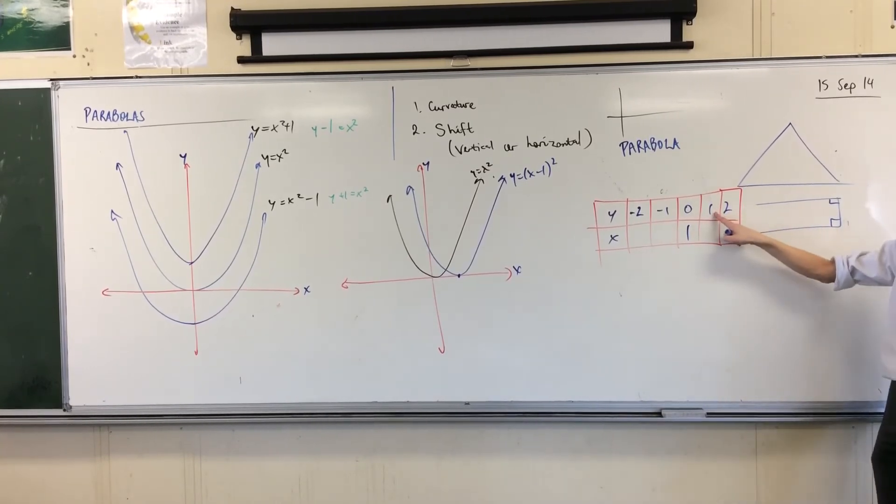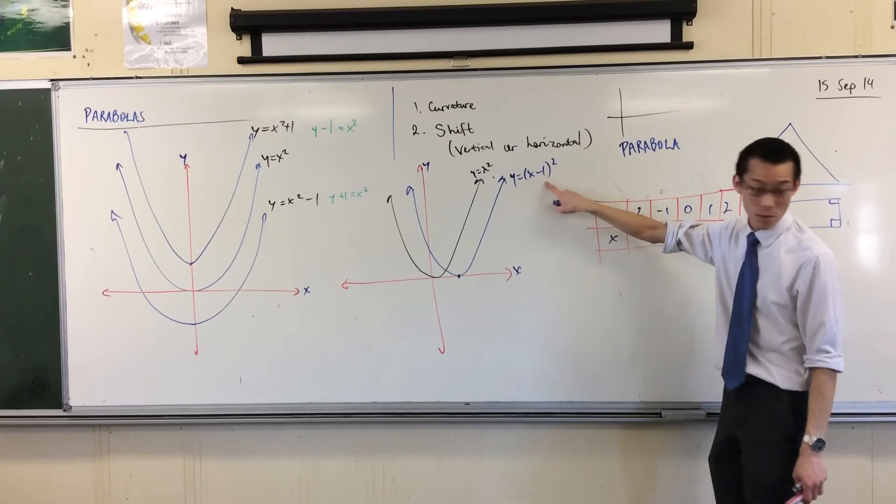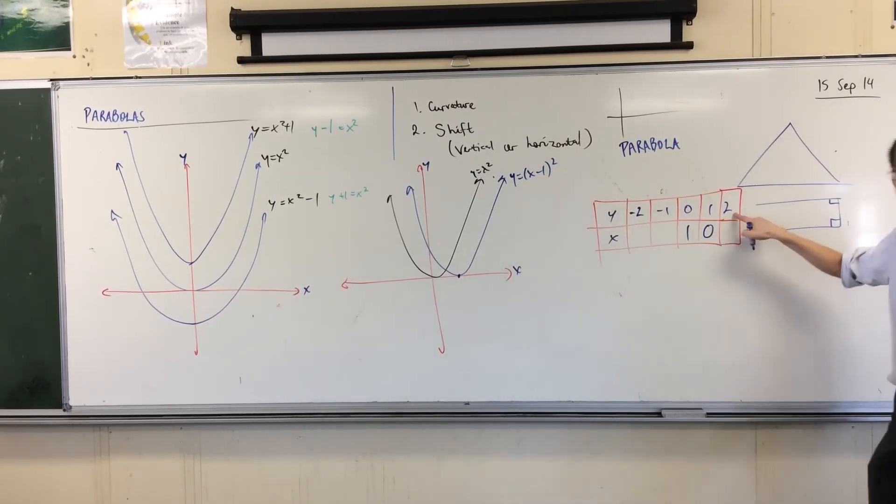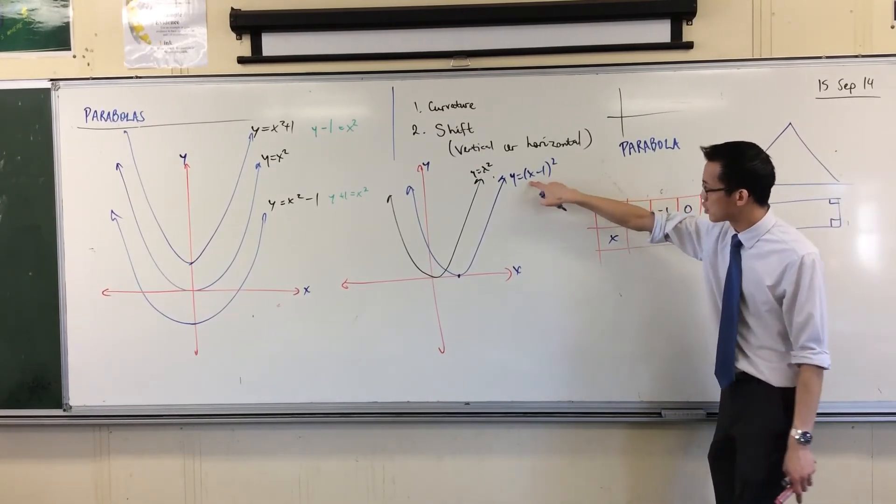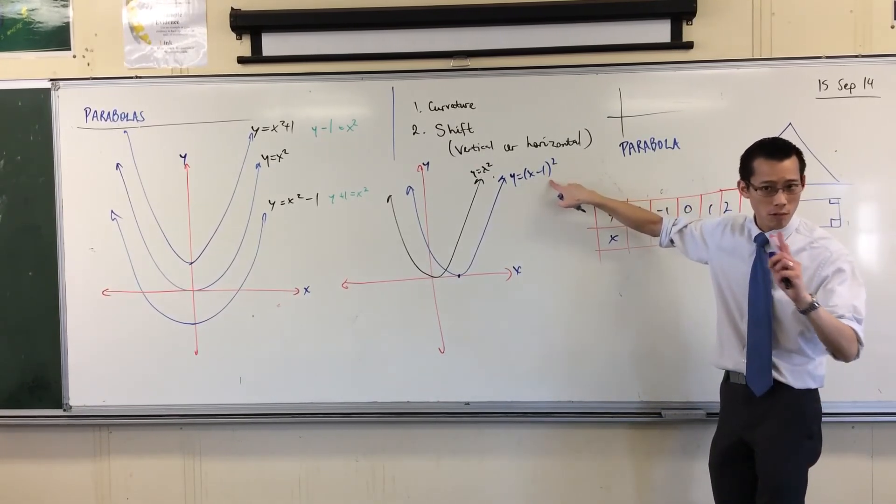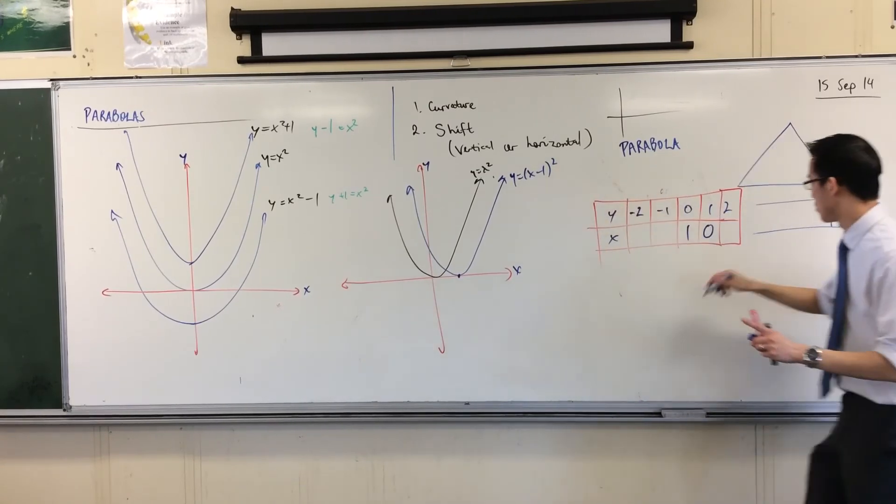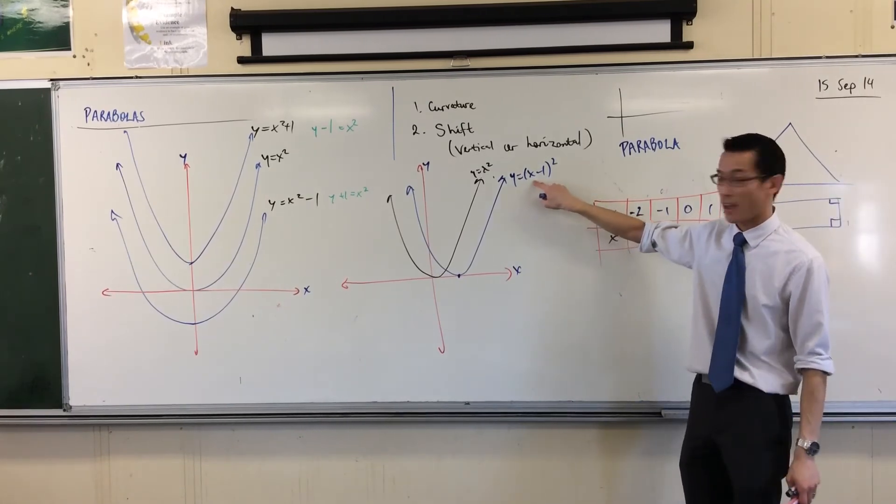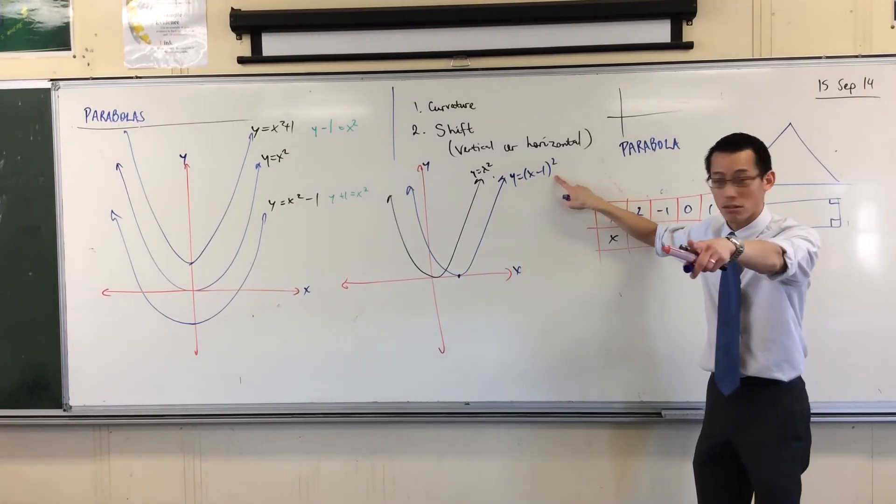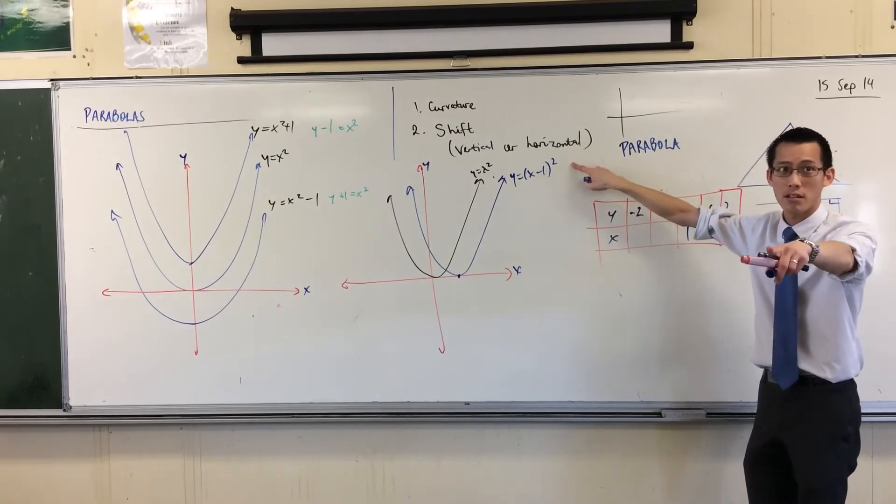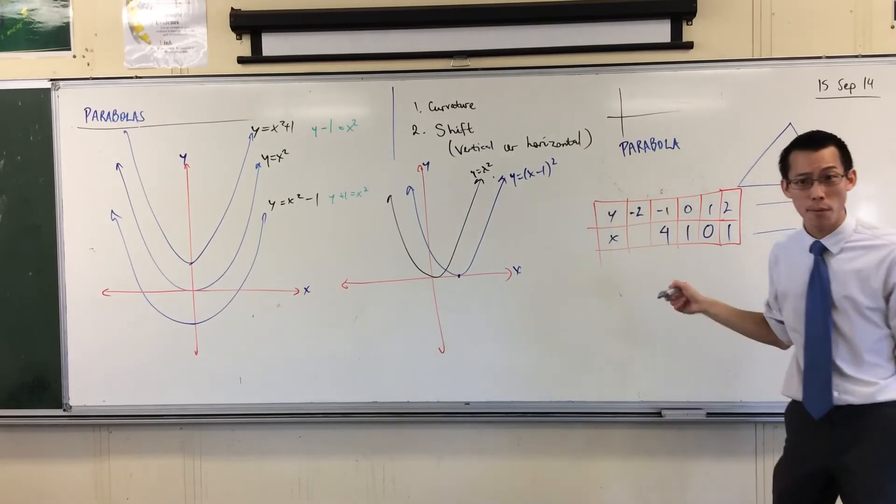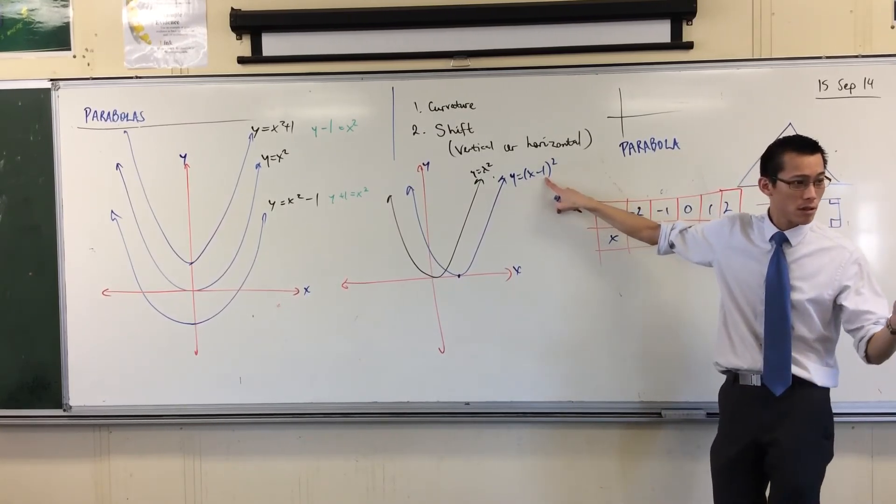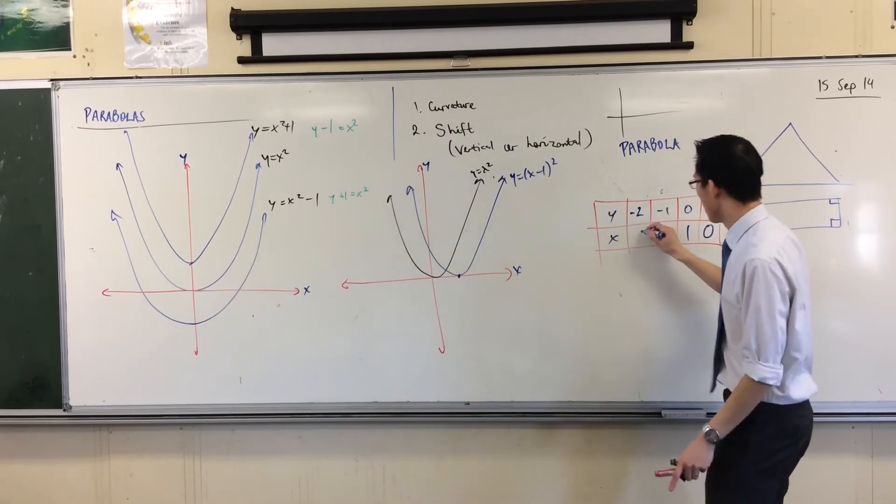What happens when I put 2 in? It'll be 2 minus 1, which is 1. And then I square it, which is 1. Okay. Now I'll go the other way. What happens when I put in minus 1 in there? Minus 1, minus 1. Minus 2. And then I square it, which gives me 4. You're recognizing these numbers from before, aren't you? Yeah, right? Minus 2. Minus 2, minus 1, gives you minus 3. And then you square it, which gives you 9.